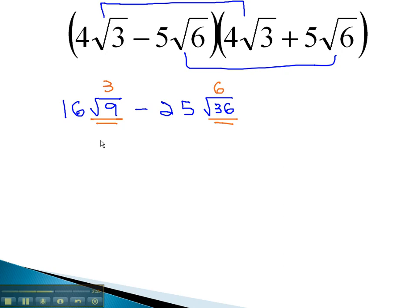Multiplying what's left, then, 16 times 3 is 48. Minus 25 times 6 is 150. We can subtract those to get negative 102.